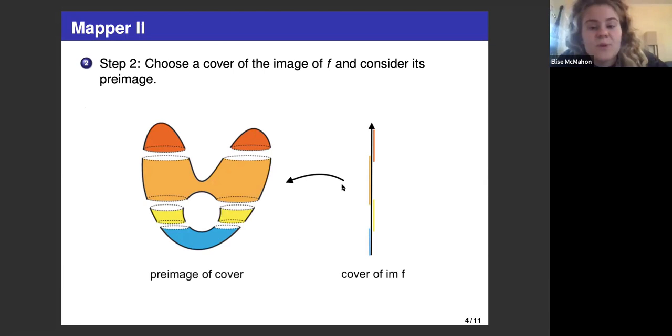The next step is to choose a cover of the image of f and consider its preimage. Here we have chosen to just take intervals of this image—red, orange, yellow, and blue—and we pull them back to the domain and consider their preimage.